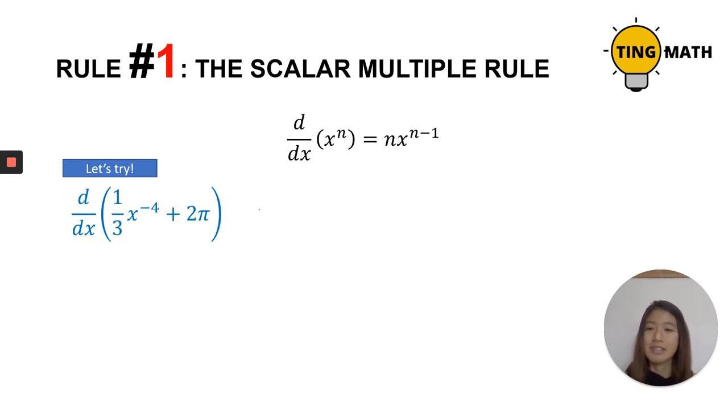So here we need to differentiate one third x to the power of negative four plus two pi. We're going to differentiate it. We're going to do the same thing. We'll leave the coefficient the same. So one third would be one third here.